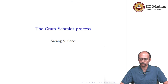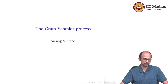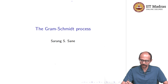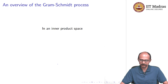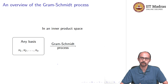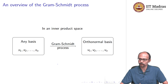In this video, we are going to talk about the Gram-Schmidt process. What is the Gram-Schmidt process? In a nutshell, what the Gram-Schmidt process does is that in an inner product space, it takes any basis x1, x2, ..., xn and using this process, produces an orthonormal basis v1, v2, ..., vn.